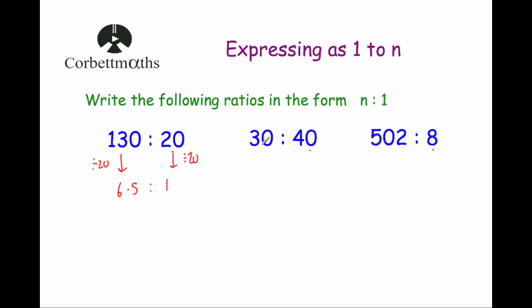Next: 30 to 40. We want the second number to be 1, so we divide both sides by 40. 40 divided by 40 is 1, and 30 divided by 40 is 0.75. So 30 to 40, written in the format n to 1, is 0.75 to 1.